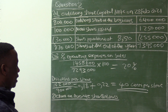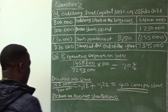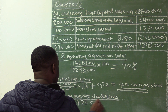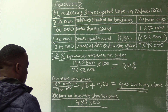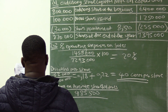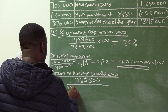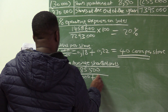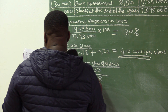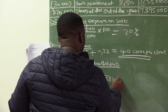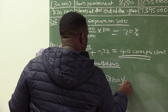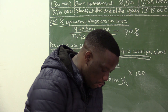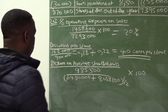Return on average shareholders' equity. The formula is net profit after tax, which is $985,500, over average shareholders' equity. Shareholders' equity figures are $6,450,000 for 2020 and $8,038,100 for 2021, and all of this is divided by 2, multiplied by 100. Let's calculate the average shareholders' equity.